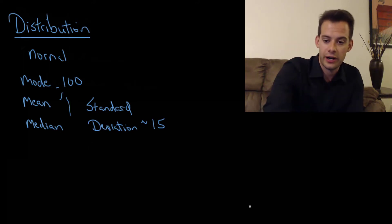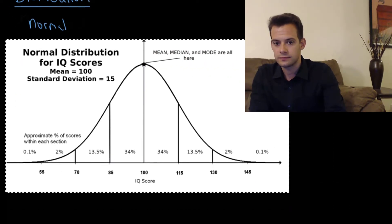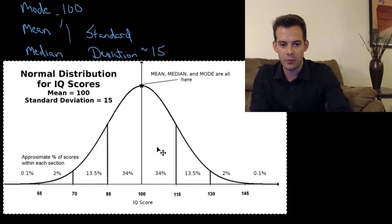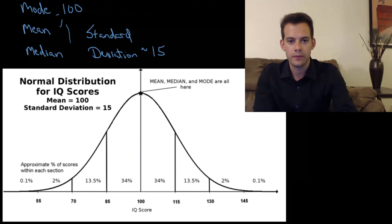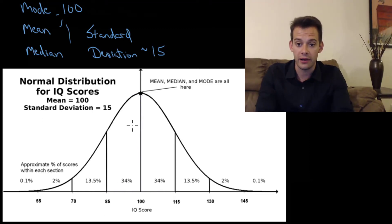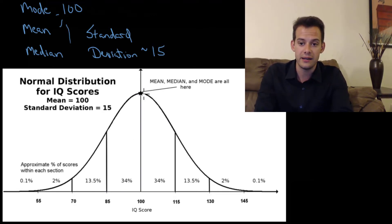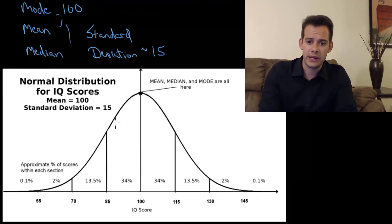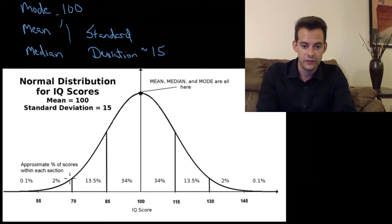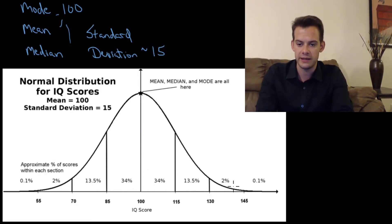Looking at the normal distribution chart for IQ scores, the score of 100 is the most frequent, shown at the peak. The frequency is symmetrical on either side, so the mean and median are also at 100. Moving away from the center, one standard deviation below is 85, two standard deviations below is 70, and three is 55. The same distances apply above the mean — 115, 130, and 145 — and the tails continue off the chart.